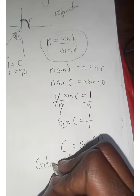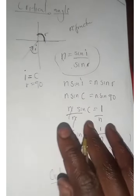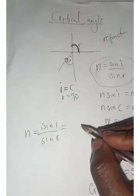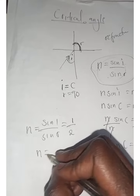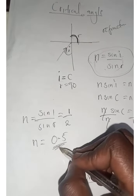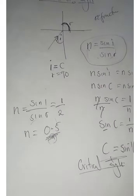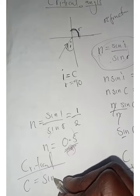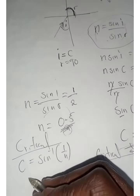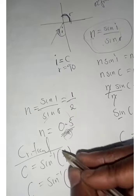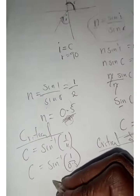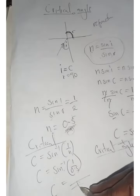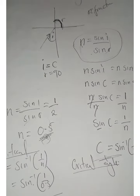In a scenario where you've already found n using n equals sine i over sine r — say n equals 0.5 — the next step is to find the critical angle. The formula is: critical angle equals sine inverse of one over n. So critical angle equals sine inverse of one over 0.5. You punch this into your calculator and get your answer. That is how you find the critical angle.